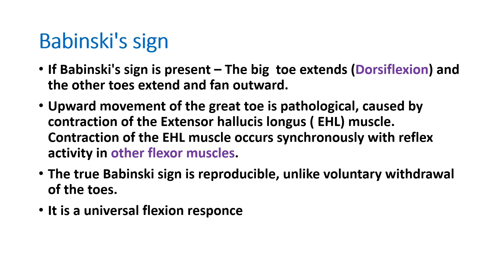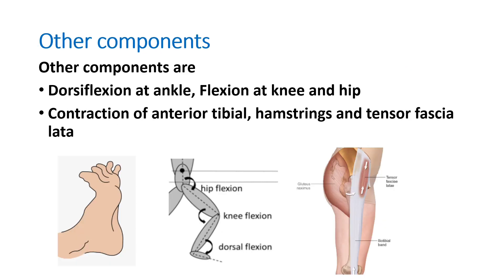The true Babinski sign is reproducible, unlike a voluntary withdrawal of the toes — you can repeat the test and get the same response each time. It is part of a universal flexion response: dorsiflexion of the great toe and other toes, dorsiflexion at the ankle joint, flexion at the knee joint, and flexion at the hip joint.